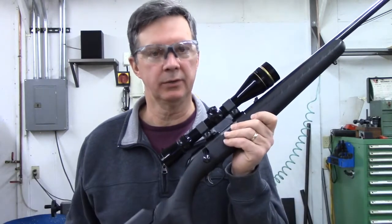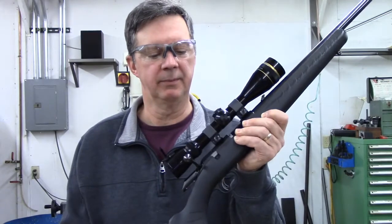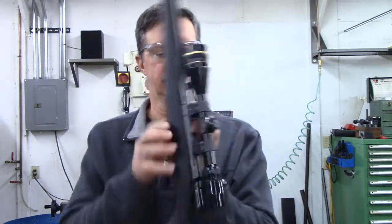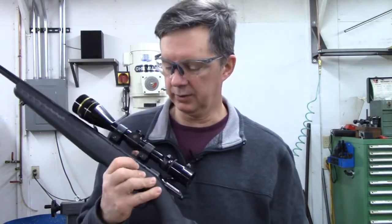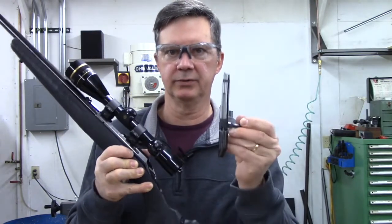Beginning with an unloaded rifle, we're going to remove the bolt from the rifle. We've already opened it up, and we're going to press the bolt release and the bolt slides right out.